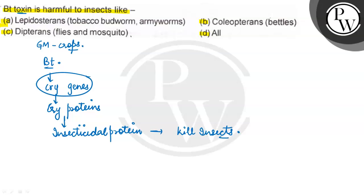Now, we have three orders. Orders means general species — those orders. There are three orders. First, Lepidoptera — tobacco budworm and armyworm. Then Coleoptera, which are beetles, and Diptera, which are flies and mosquitoes. So these three orders belong to the Arthropoda phylum.